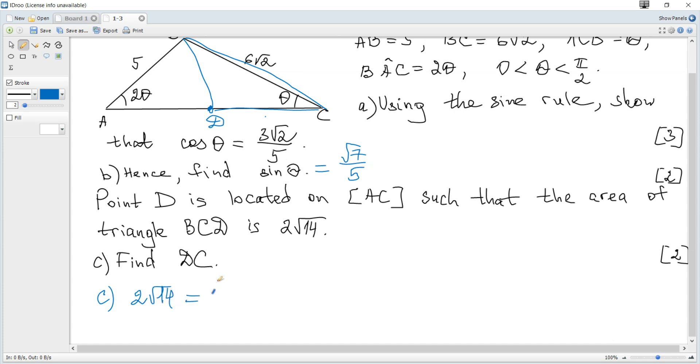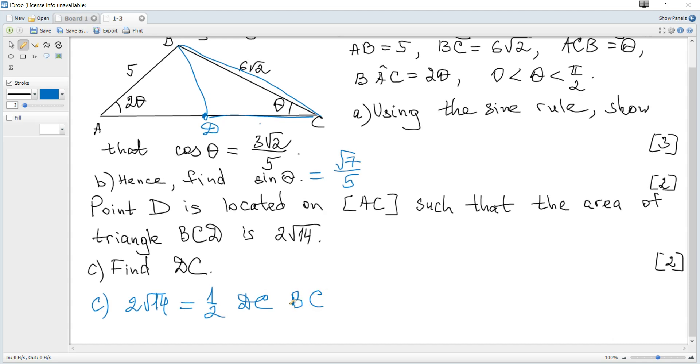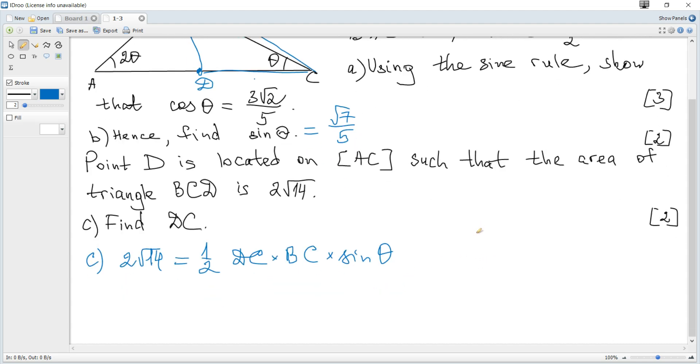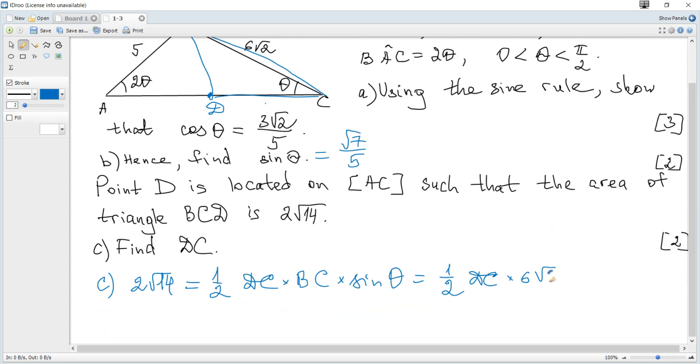...half times one side, DC, times another side, BC, times sine of the angle between them, which is theta. It becomes a half times DC times 6 times root 2 times sine of theta, which is square root of 7 over 5.